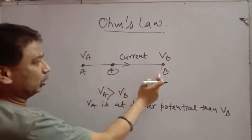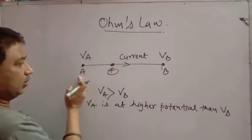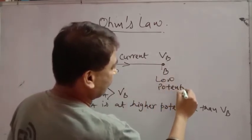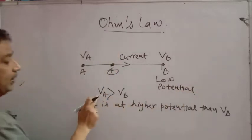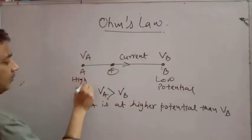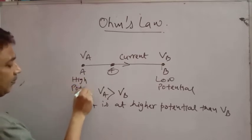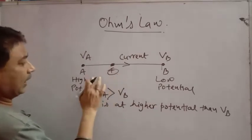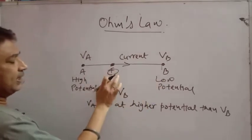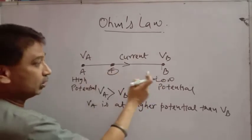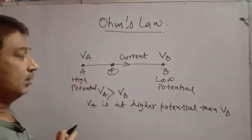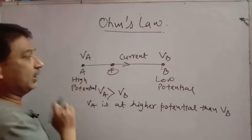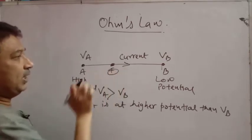As discussed in the previous class, because of the potential difference the charge particle will move. If the charge is negative it moves from lower to higher potential, and if it is positive it moves from higher to lower. Either way, this flow constitutes a current.